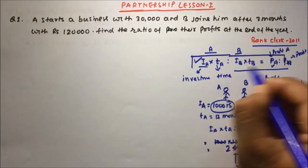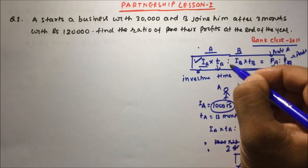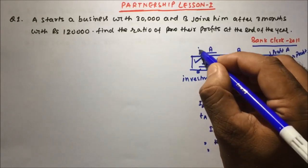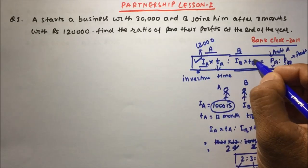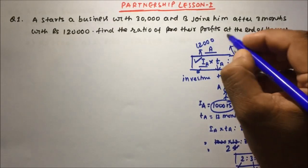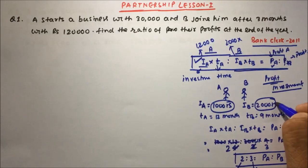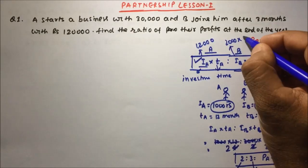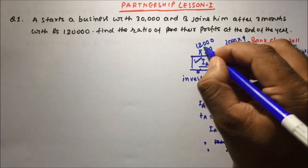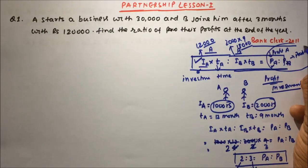This formula you have to keep in mind: investment × time. Suppose you are investing 1000 rupees for one year, total investment is 12,000 rupees. Similarly, if B is investing 2000 rupees for nine months, it will be 18,000 rupees. In the same ratio your profit will be divided.